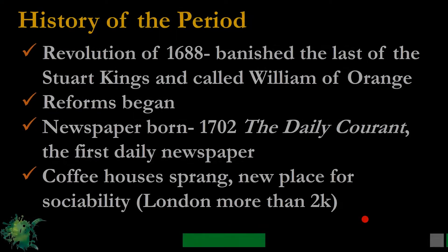First, we will talk about the history of 18th century literature, then the features of literature which flourished in this period, and then why it is called the Classical or Augustan Age. As covered in previous videos, the Revolution of 1688 — the Bloodless Revolution — banished the Stuart kings, placing William of Orange on the throne, and from there reforms began.